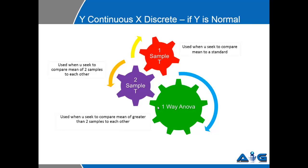The first is referred to as a one sample t-test, the second as a two sample t-test, and the third as one way ANOVA.